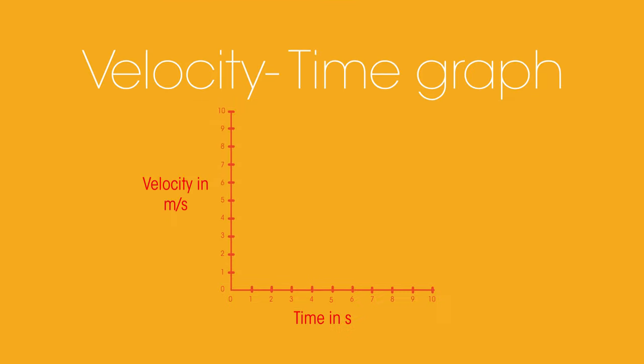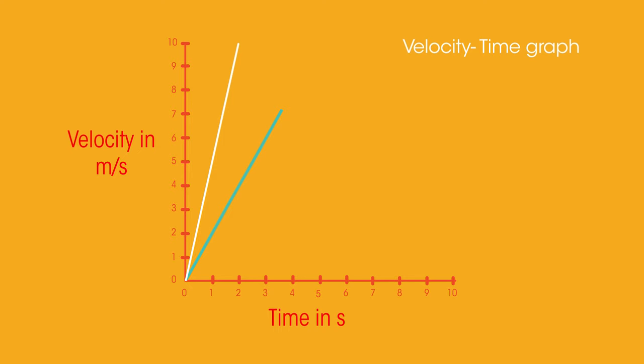If we look at acceleration on a velocity time graph, the different options look like this. This is faster acceleration than this because it's steeper, so is reaching each velocity in less time.